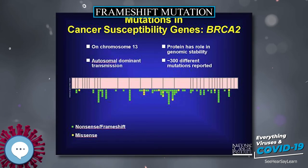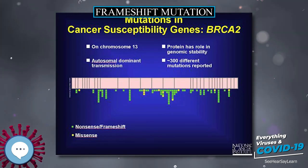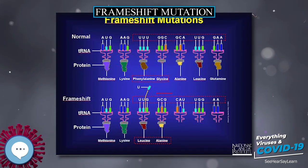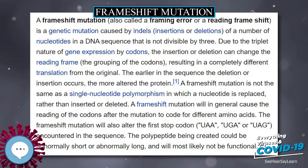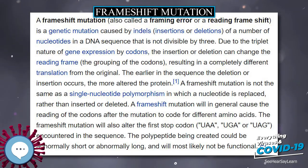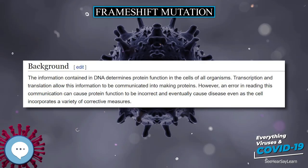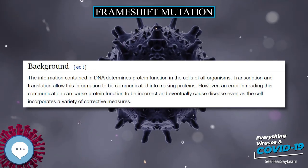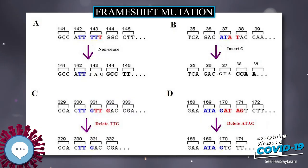Crohn's disease has an association with the NOD2 gene. The mutation is an insertion of a cytosine at position 3020, which leads to a premature stop codon, shortening the protein that is supposed to be transcribed. When the protein forms normally, it responds to bacterial lipopolysaccharides, whereas the 3020 insertion mutation prevents the protein from being responsive.